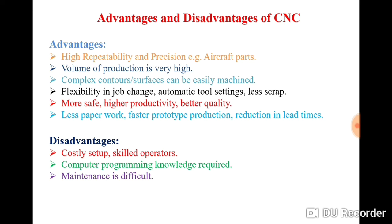CNC is not suitable for job production because the variations are very high — you have to manufacture different products. In mass production the variation is very low and quantity is very high. CNC machines are best for batch production, where there is a little variation and you are manufacturing products in a limited batch size.